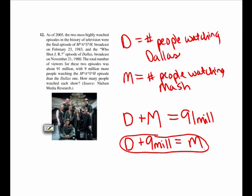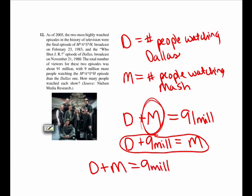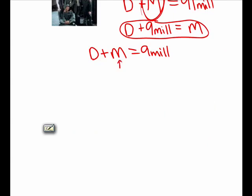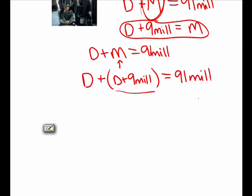Since the second equation is solved for M, wherever I see an M I can replace it with D plus 9 million. So in the first equation, I replace M with D plus 9 million. That gives me D plus (D plus 9 million) equals 91 million. Now I have an equation with only one variable: D plus D plus 9 million.